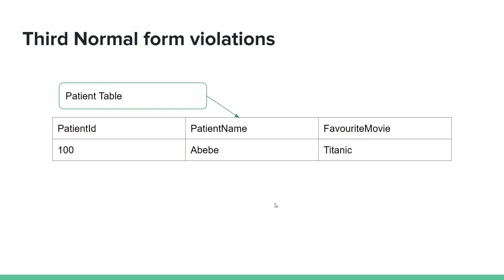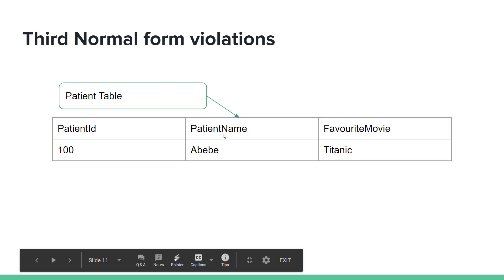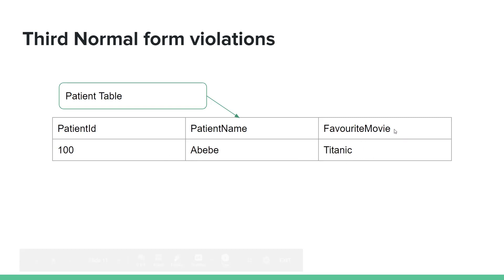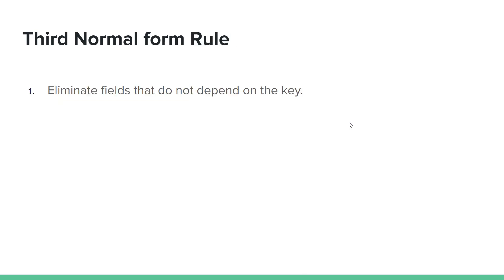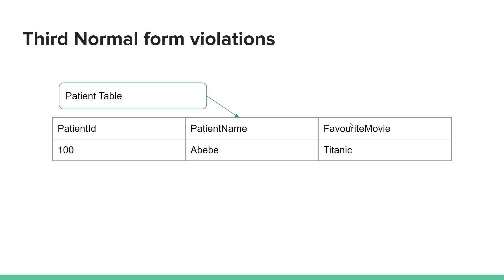For third normal form, you can use patient ID, patient name, and favorite movie. When you use the patient ID, you can identify all other patient attributes. Non-key attributes should depend only on the primary key.